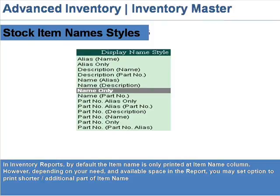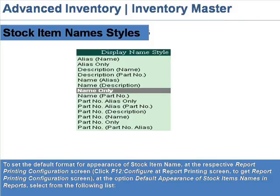Stock item names and styles in inventory reports: by default, the item name is only printed in the item name column. However, depending on your need and available space in the report, you may set an option to print a shorter or additional part of the item name. To set the default format for appearance of stock item names, go to the report printing configuration screen by clicking F12: Configure at the report printing screen. At the option 'Default Appearance of Stock Item Names in Reports', select from the following list.